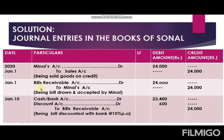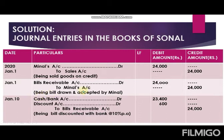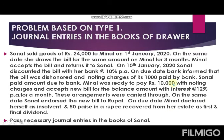For these two sentences, the date is again January 1st. The journal entry in the books of the drawer for bill drawn and accepted is: Bills Receivable account debit to Drawee's account. Instead of drawee, write the name — Minal. So the entry is: Bills Receivable account debit to Minal's account, 24,000. Narration: being bill drawn and accepted by Minal, or 'being acceptance received for three months.' Keep the narration short and to the point.